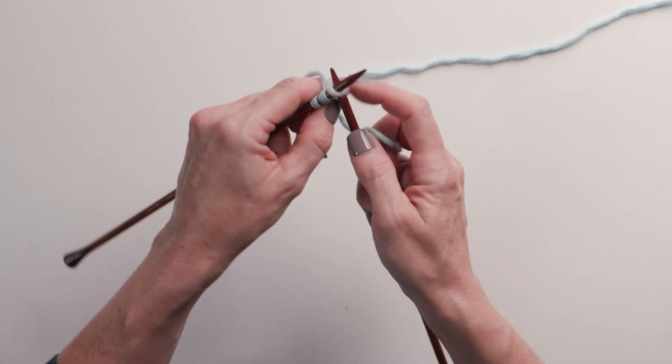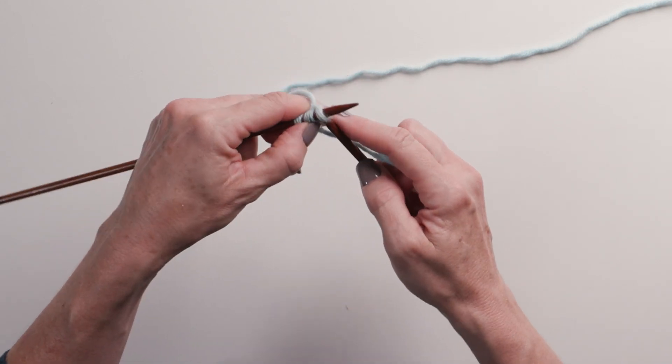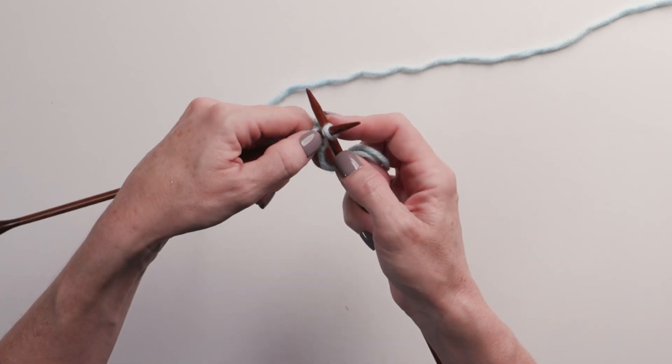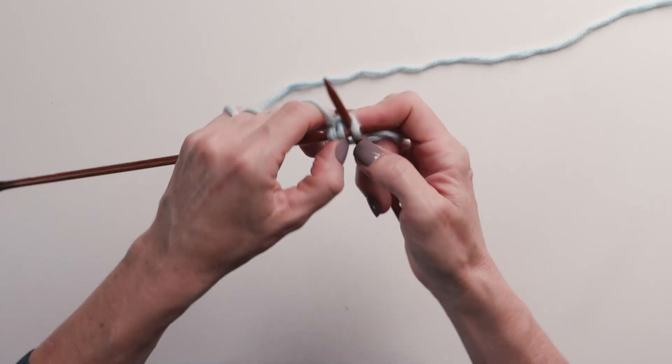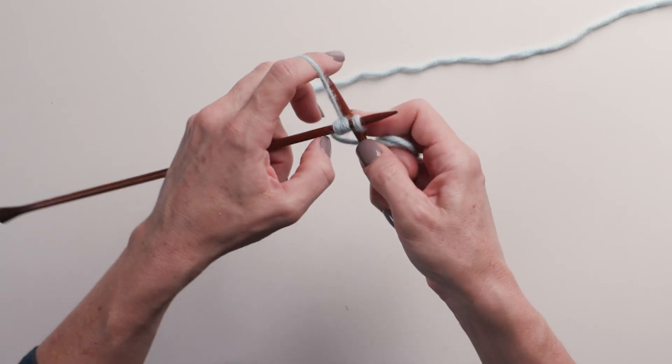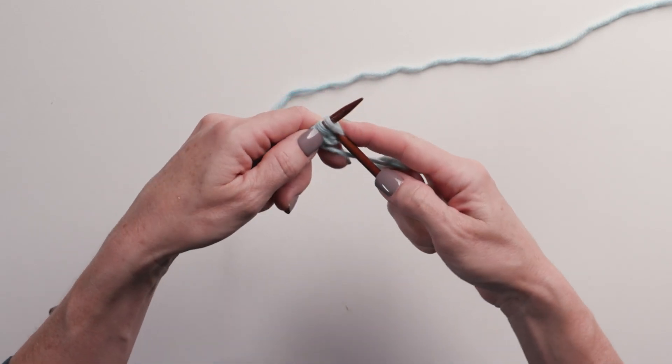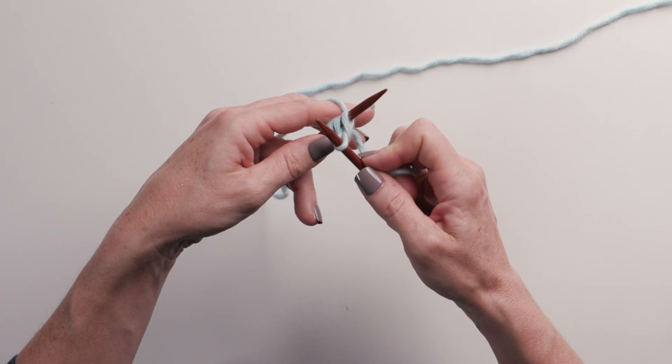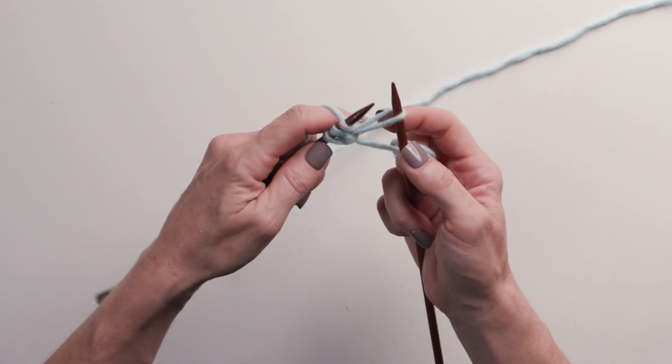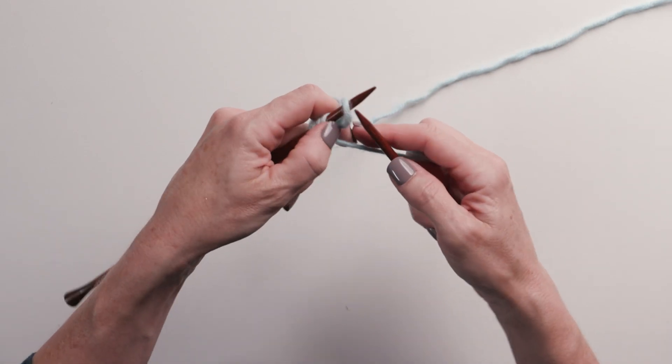So again, do not go through the stitch. Insert your needle between the first two stitches. Wrap your yarn, catch that loop, bring it through, pull it up, and put it on the needle.